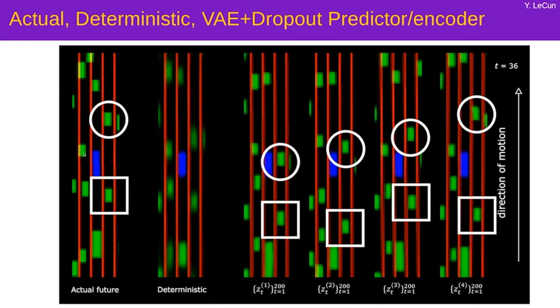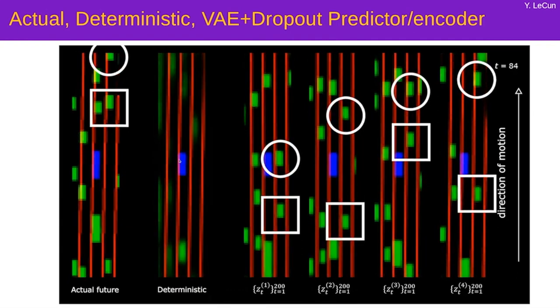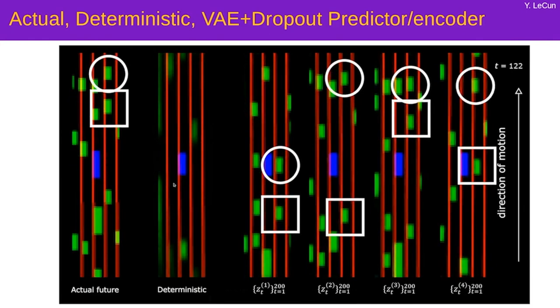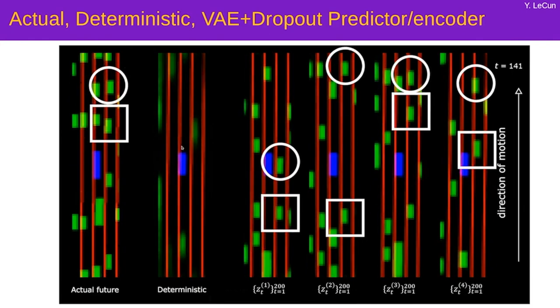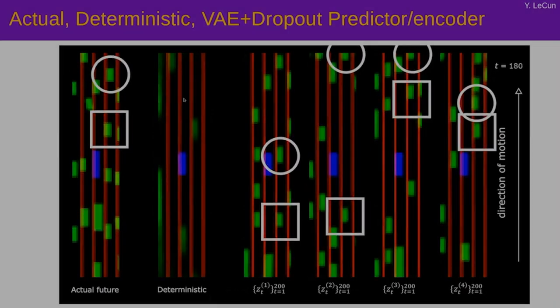So these are the results. You get blurry predictions if you don't use a latent variable, but you get much better prediction shown on the right here by sampling the latent variable with different values. You get sort of realistic predictions that are all very different. On the left here is the recorded video.